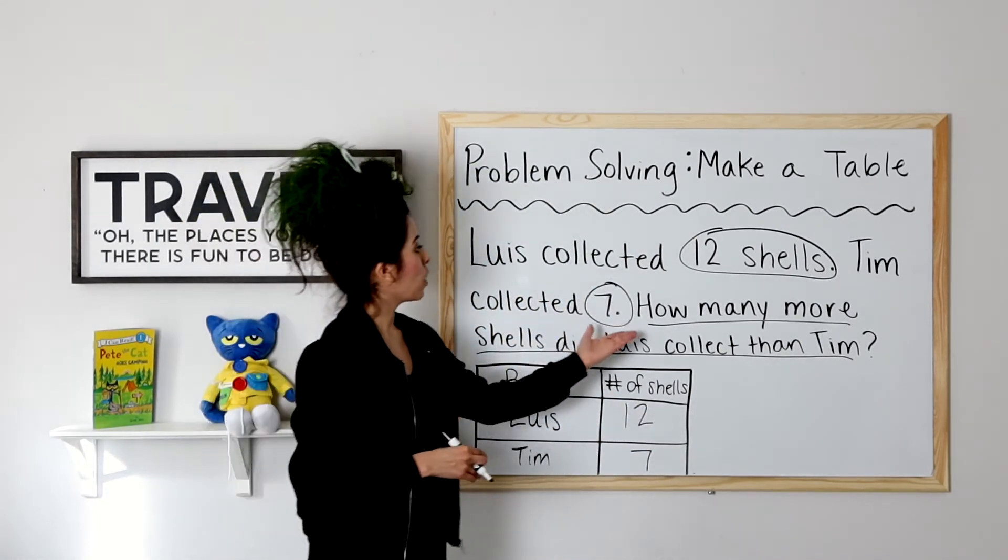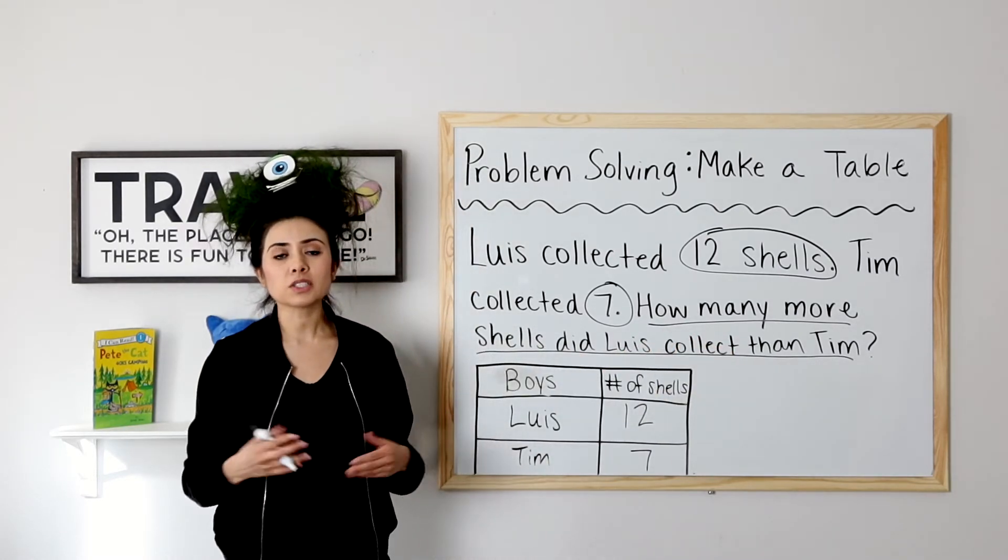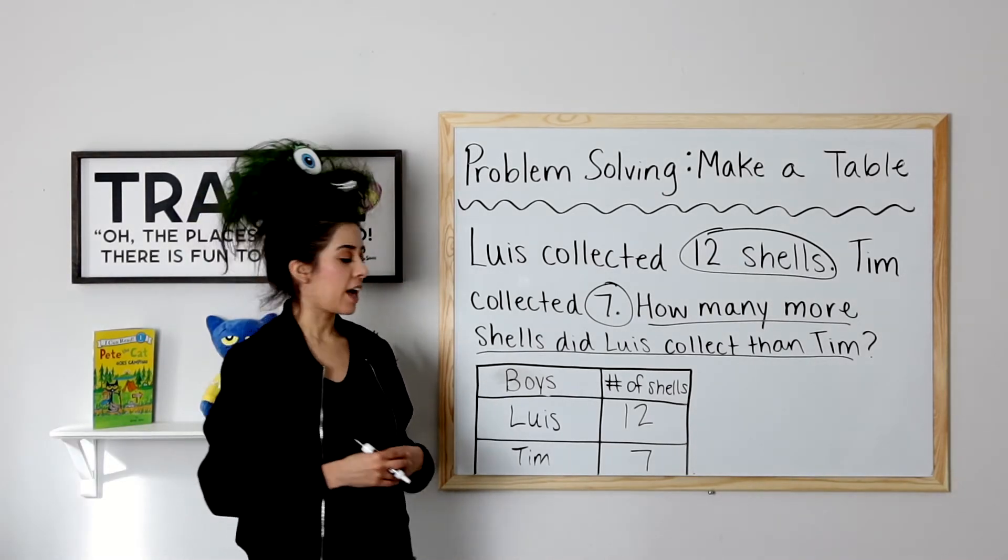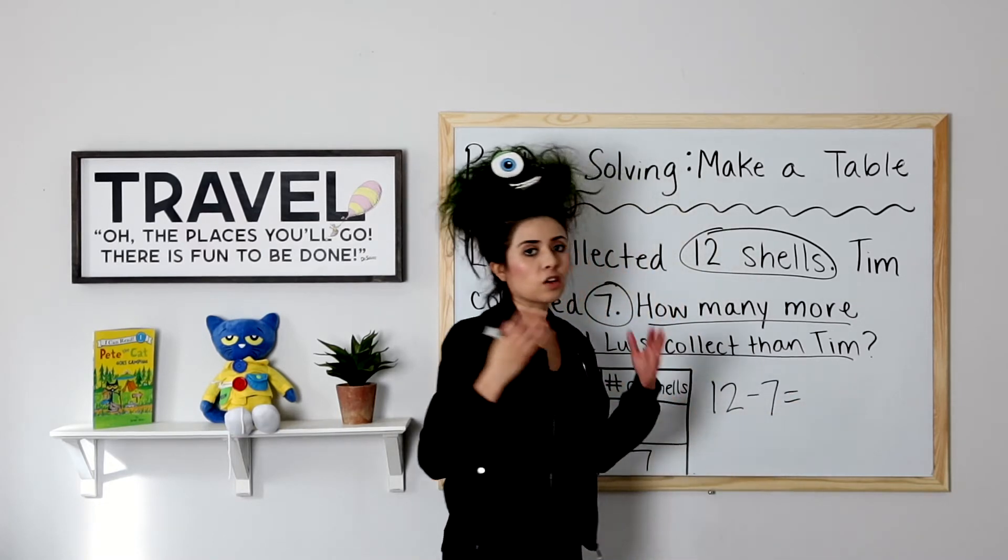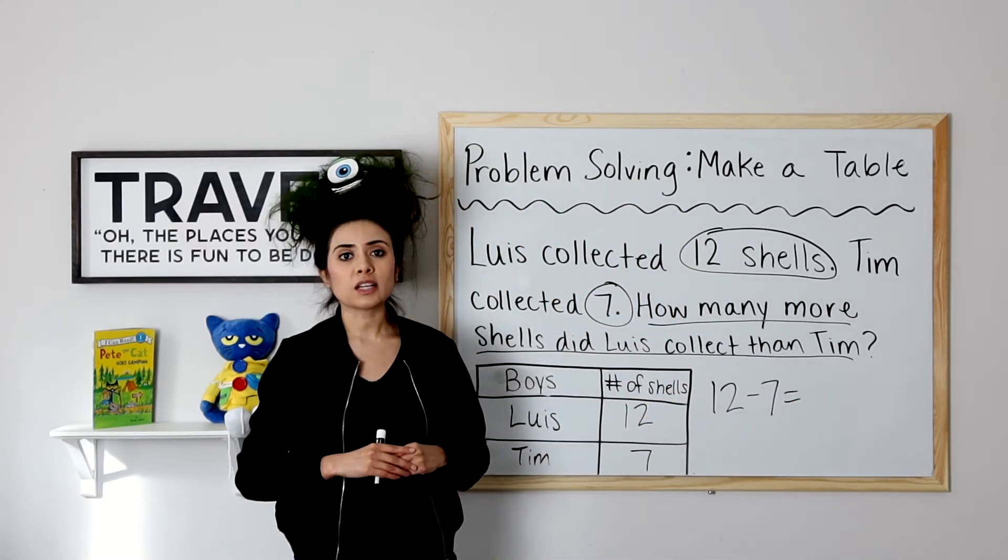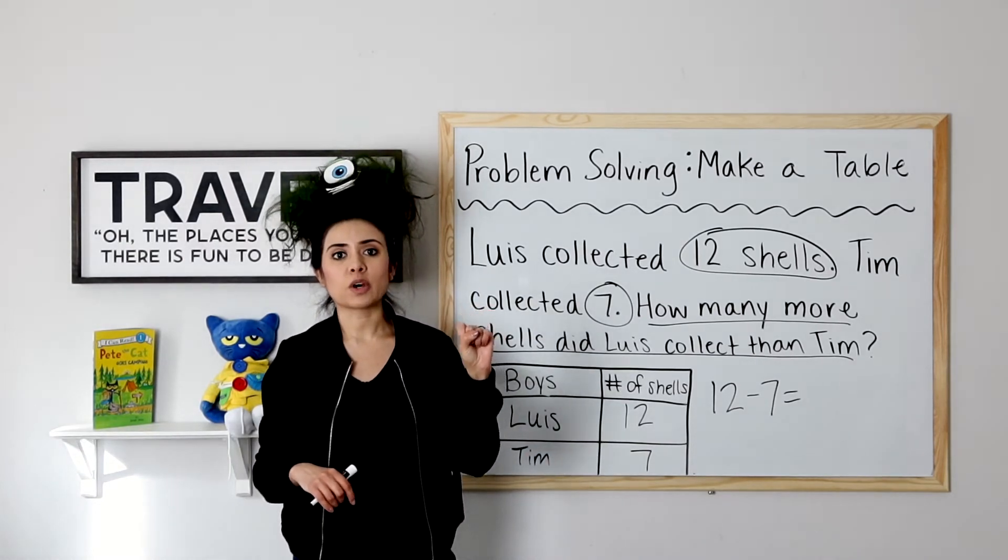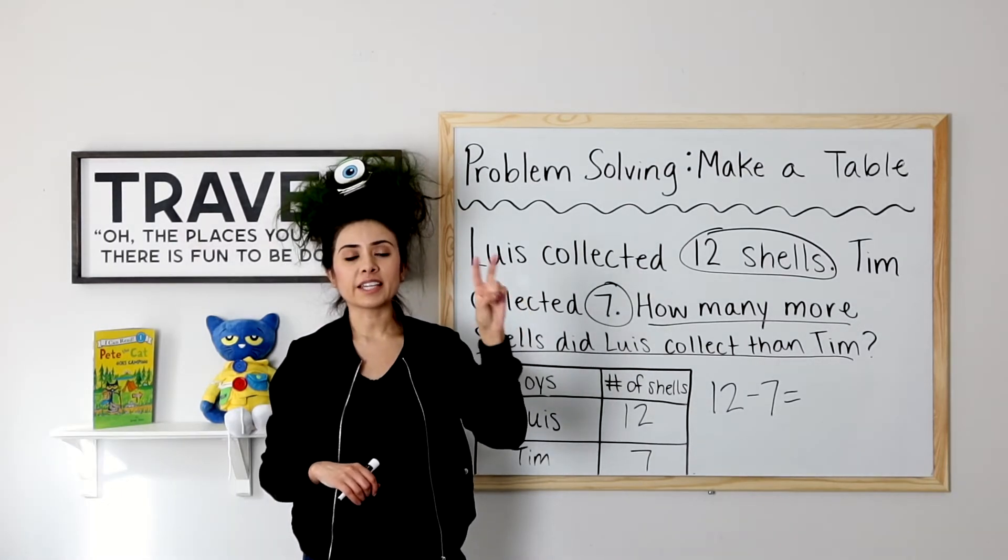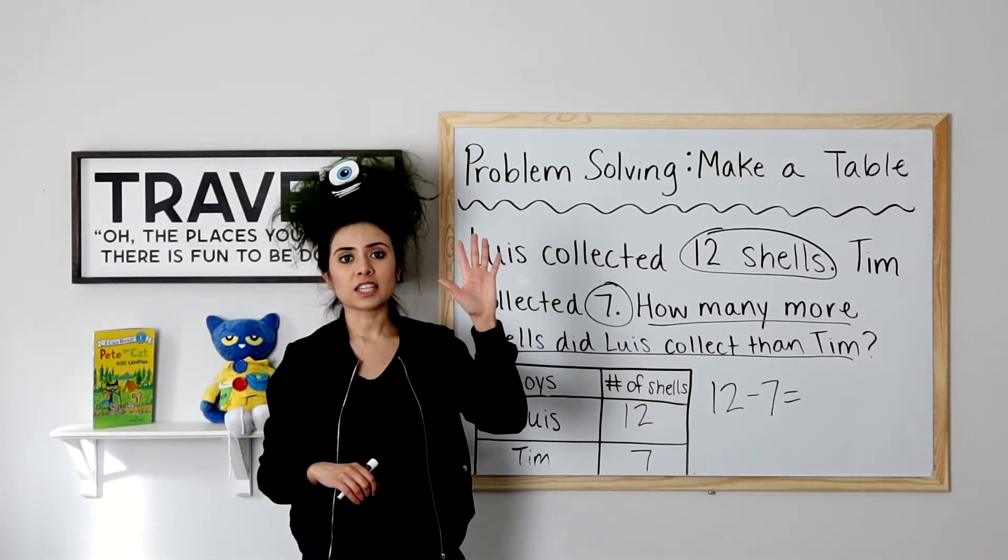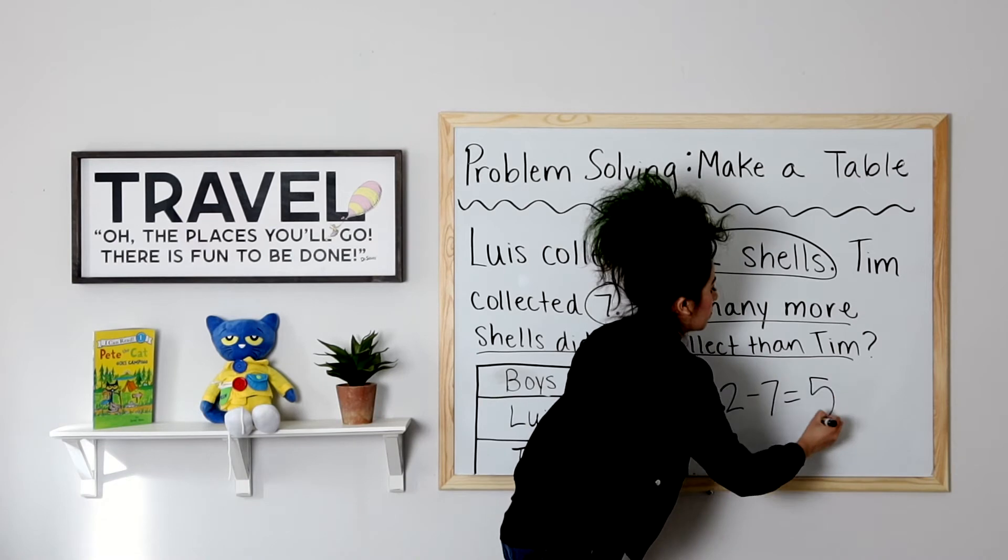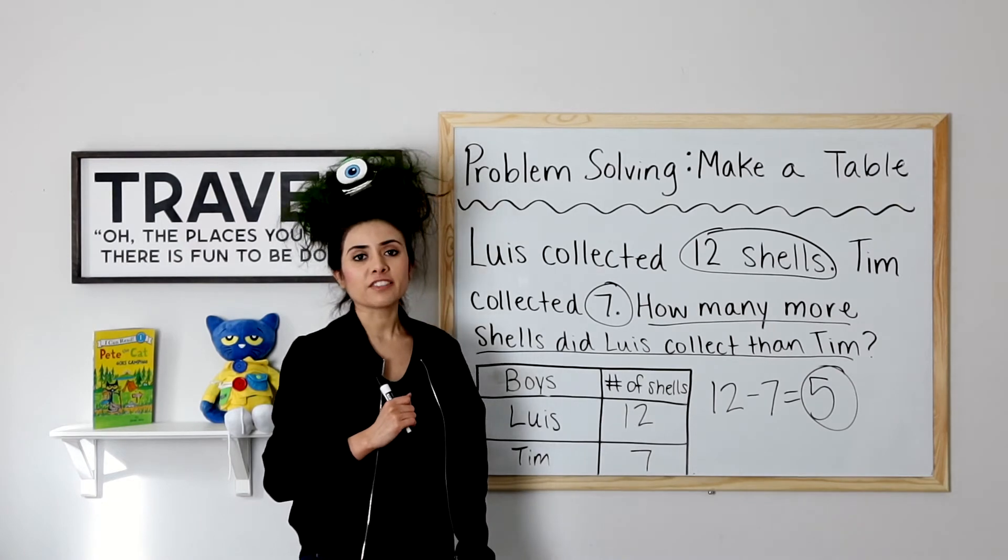Okay, so we want to know how many more shells did Lewis collect than Tim? Remember, when we are comparing two numbers we need to subtract. So I have twelve minus seven equals what? That will tell me how many more shells Lewis collected than Tim. Let's go ahead and hold up this and say seven and count up to twelve. Ready? Seven, eight, nine, ten, eleven, twelve. Twelve minus seven equals five. Lewis collected five more shells than Tim. Very good.